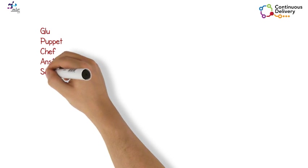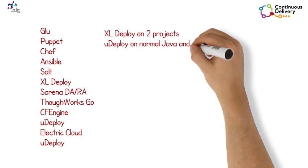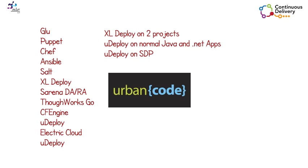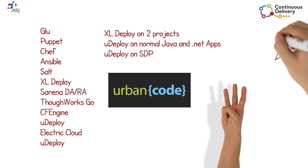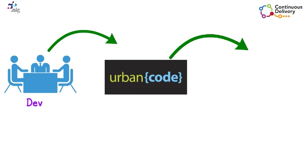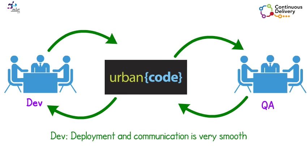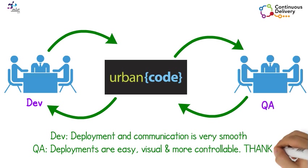We evaluated twelve different tools and did three proof of concepts. We selected IBM UrbanCode Deploy (uDeploy), and now we have three projects using uDeploy to automate and manage deployment and communication with QA — and the feedback is awesome. Development feedback: communication with QA regarding deployments is now release-smooth. QA feedback: deployments are now easy, visual, and more controllable.